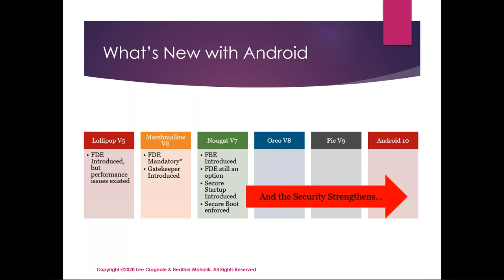You won't get anything user-related and useful without a before-first-unlock extraction, which is different from secure startup. Oreo, Pie, and Android 10 continue all of these security measures full force. What this means: no more brute force. Essentially all devices are moving toward file-based encryption — LG may be the last to adopt it. Samsung is moving all devices to it and OnePlus, Huawei, and others have already adopted it.